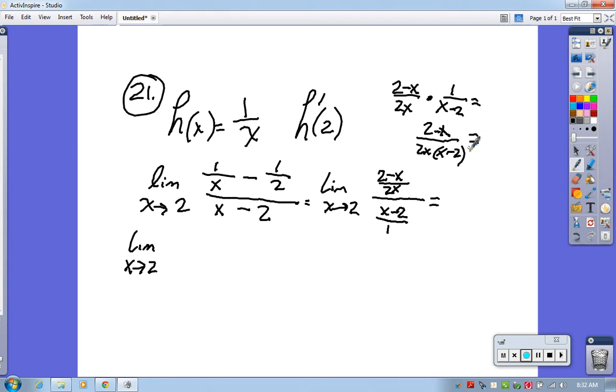I want this x - 2 to cancel out because if I plug in 2, it makes me divide by 0. So up top in the numerator, I can factor out a negative 1. Notice if I factor out a negative 1,